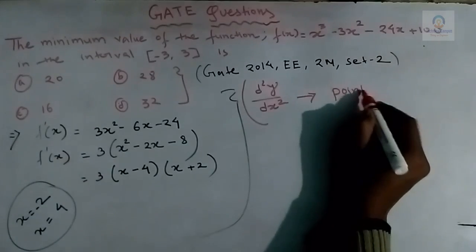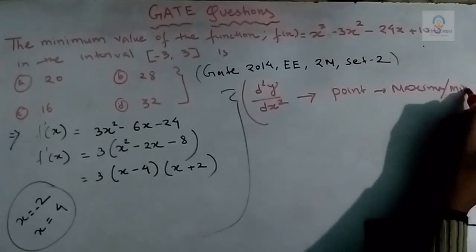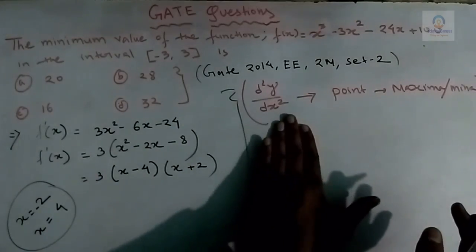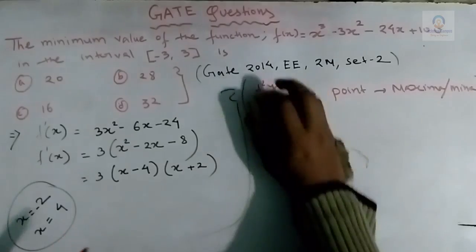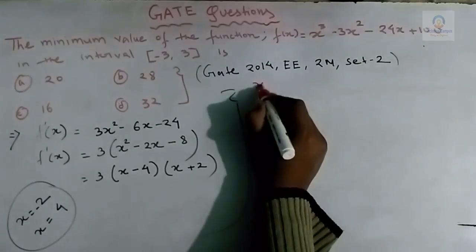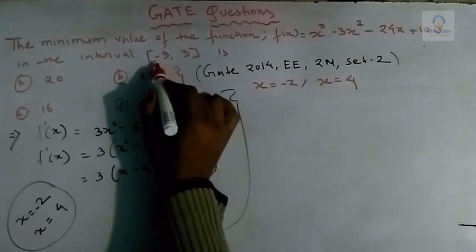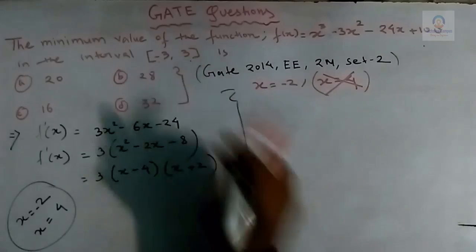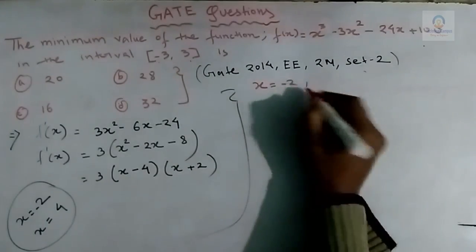We only calculate the second derivative when we need to find the point of maxima or minima. Here we need the minimum value, so we directly substitute the critical points into the function. The critical points are x = -2 and x = 4. Since the interval is [-3, 3], we discard x = 4 as it does not belong to this interval.